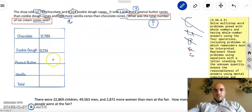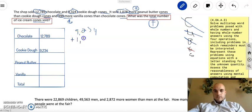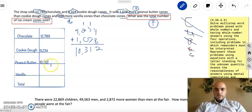So we already have chocolate and cookie dough. Let's see if we can do peanut butter next. So it sold 1,078 more peanut butter cones than cookie dough cones. OK. So I have cookie dough which is 9,234. I'm going to add 1,078 to it. 4 plus 8 is 12, carry the 1. 1 plus 3 is 4, plus 7 is 11. 1 plus 2 is 3. 9 plus 1 is 10. OK. So peanut butter is 10,312 cones.